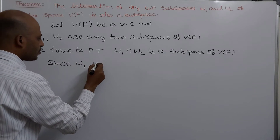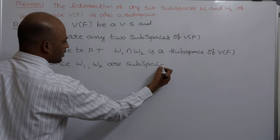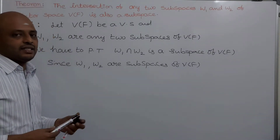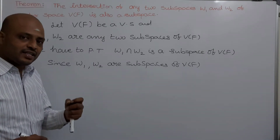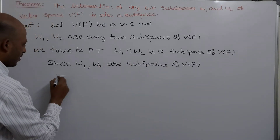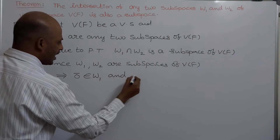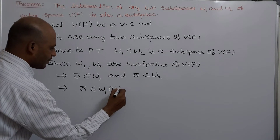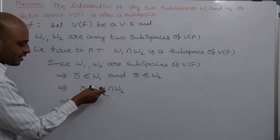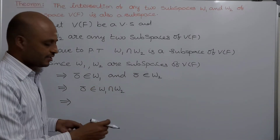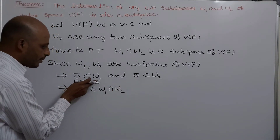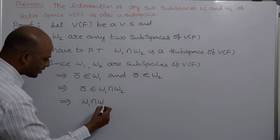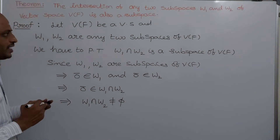Since w1 and w2 are subspaces of v of f, we know that every subspace contains at least the zero vector of the vector space v of f. This implies 0-bar belongs to w1 and 0-bar belongs to w2. Since intersection is the set of all common elements, 0-bar belongs to w1 intersection w2, which implies w1 intersection w2 is non-empty.